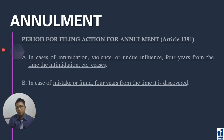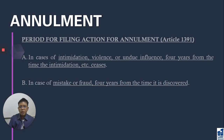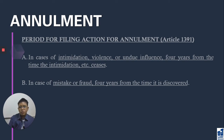Number two, in case of mistake or fraud, the 4 years is counted from the time it is discovered. The injured party must first know that he is an injured party. You cannot count it against him if he is not aware that there was fraud or mistake. If he knew he was being deceived, he would have filed for annulment already. So the prescriptive period starts from the time of discovery.